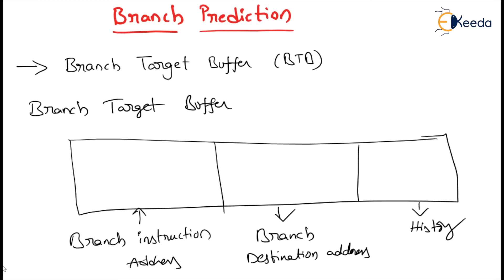When a branch instruction is first taken, the CPU allocates an entry in the Branch Target Buffer to associate the branch instruction's address with its destination address, and initializes the history. As instructions are decoded, the CPU searches the Branch Target Buffer to determine whether it holds an entry for a corresponding branch instruction. When there is a hit, the CPU uses the history to determine whether the branch should be taken or not.